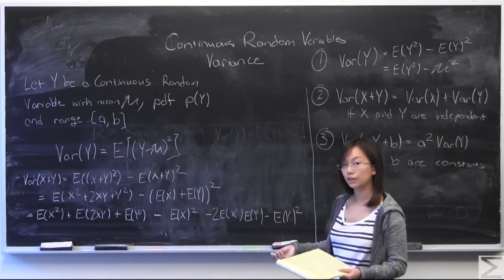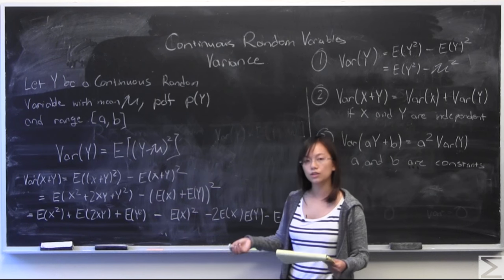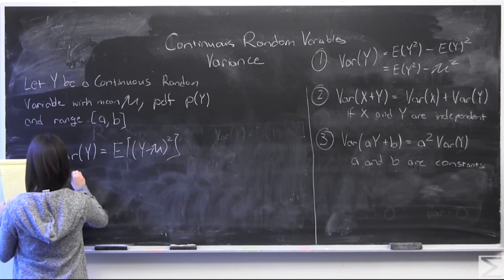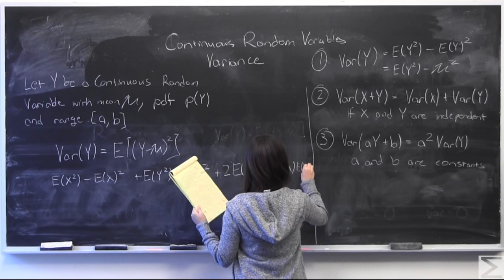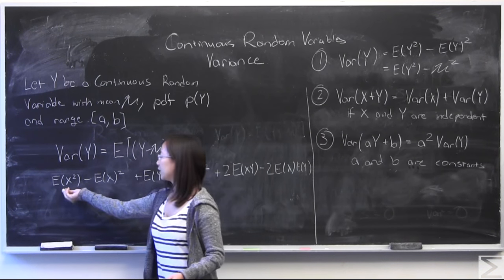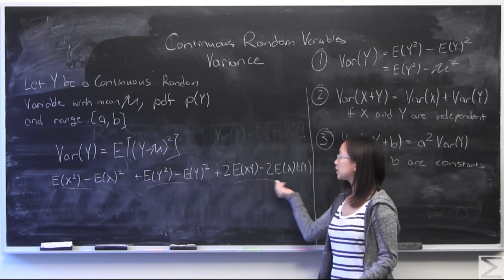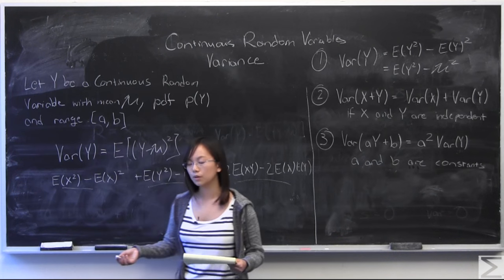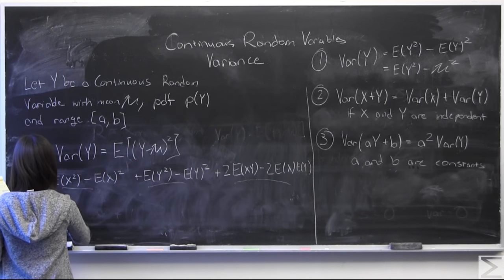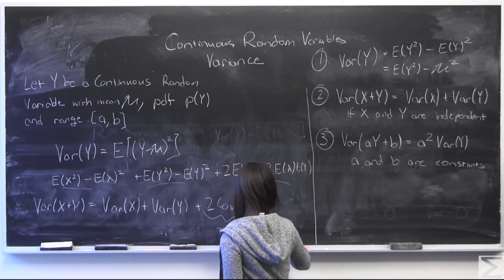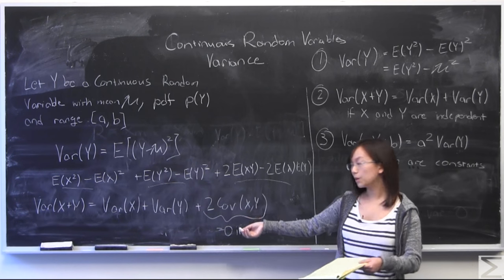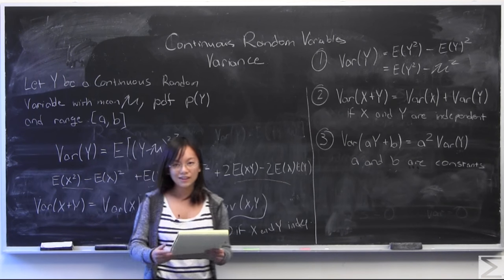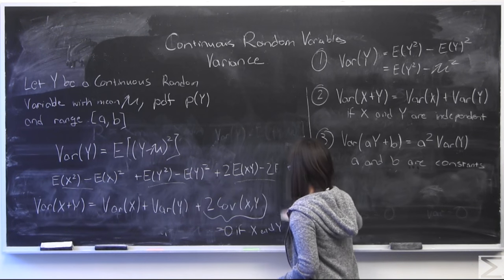I'm also going to regroup terms and use the definition of something called covariance in order to evaluate this to the last step. I've grouped it together so you might be able to see it now — this is variance of x, this is variance of y, and this is what's known as two times the covariance of x and y. When x and y are independent, that means the covariance is equal to zero. So variance of x plus y equals variance of x plus variance of y plus two times covariance of x and y — but that's going to be equal to zero if x and y are independent. And that proves number two.